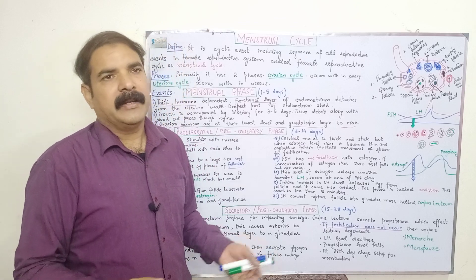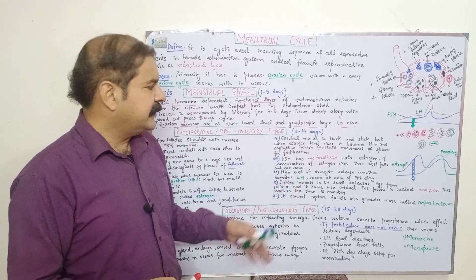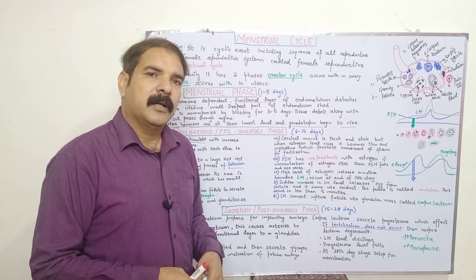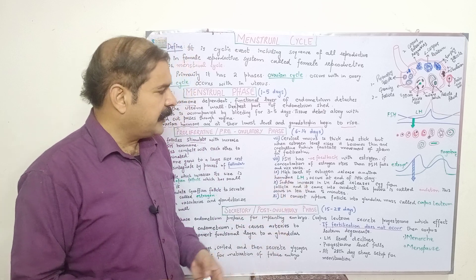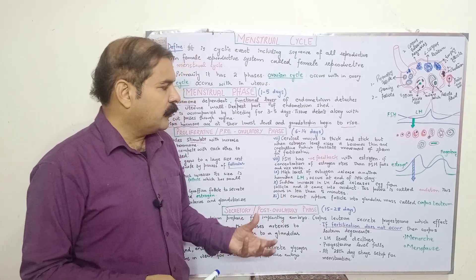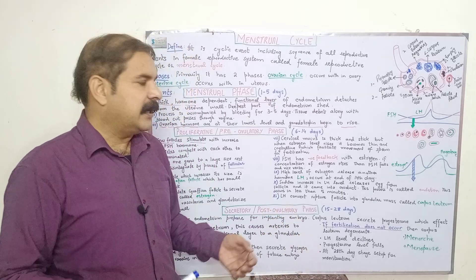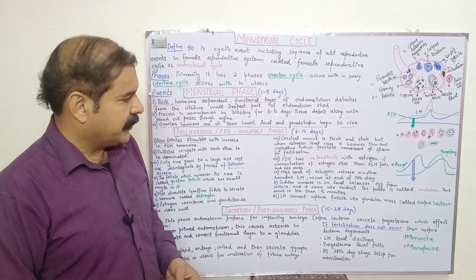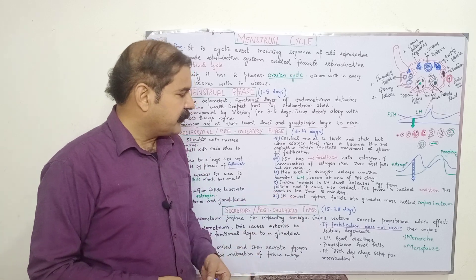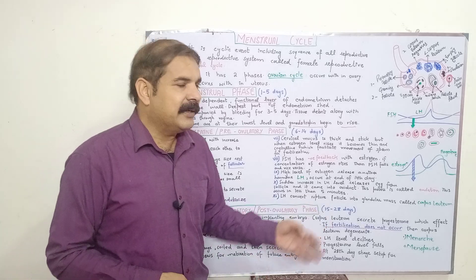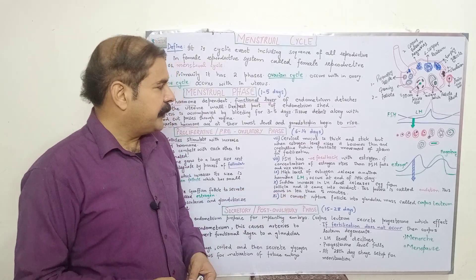High levels of estrogen stimulate the release of another hormone called LH (luteinizing hormone), and this occurs at the 14th day of the cycle. The sudden increase in LH level releases the egg from the ovary into the oviduct — a process called ovulation — and this whole process is completed within five minutes. LH then converts the ruptured follicle into a glandular mass called the corpus luteum.